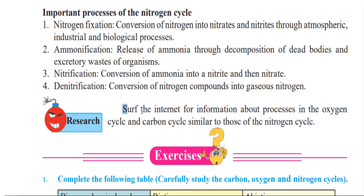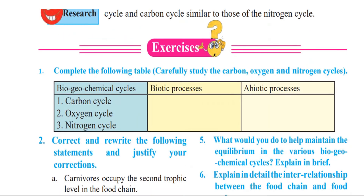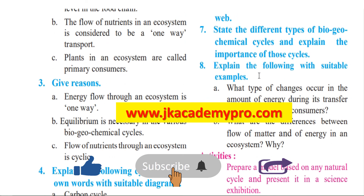Do a little research, children — surf the internet for information about the processes of the oxygen cycle and carbon cycle similar to those of the nitrogen cycle. We saw four processes of the nitrogen cycle; you can find similar processes under the oxygen cycle and carbon cycle too. I hope you all enjoyed the lesson. Do solve the exercise given at the end of the chapter. To check your answers, you can visit our website at www.jkacademypro.com — you will get the link in the description box below. Thank you. Bye-bye.